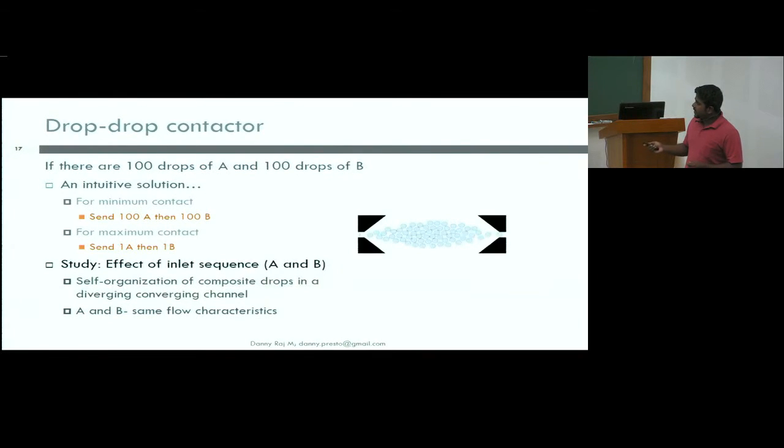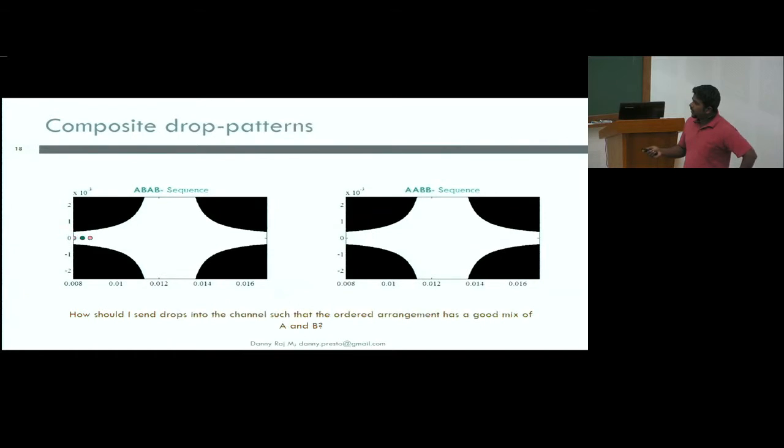We take a simple self-organizing system, like the diverging-converging channel, and then we send in the drops. We assume for simplicity's sake that A and B flow the same way. When you send in drops one after the other, you see that because of the layering instability, it pushes drop A up and drop B down. Because of this, you see a horizontal stratification that happens. So what you thought would intuitively work for the system actually does not work. It gives you, in fact, the worst possible arrangement inside the channel.